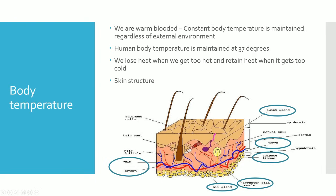In this diagram, the main things you need to know are: the sweat glands, which produce sweat; the nerves, which carry information from the skin to the brain, with receptors detecting touch, temperature, and so on; the adipose tissue at the bottom layer, which is essentially fat and acts as an insulating material retaining heat; the erector muscle, which erects hair follicles when cold; and the oil glands within the dermis layer, along with veins and arteries below.